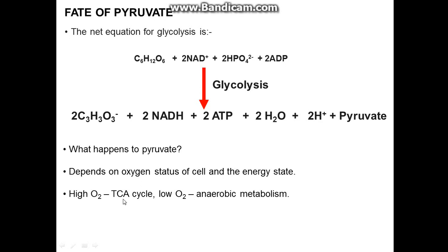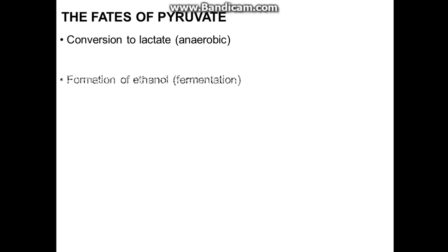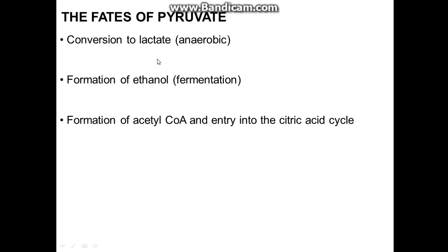High oxygen leads to the TCA cycle, which is the tricarboxylic acid cycle. Low oxygen leads to anaerobic metabolism. In this episode I'm going to be discussing solely anaerobic metabolism and alternatives to the TCA cycle. Pyruvate can either be converted to lactate, which is anaerobic when there's no oxygen, or to ethanol — anaerobic but in yeast and certain bacteria — or to acetyl-CoA entering the TCA cycle, which I'll discuss in the next episode under pyruvate dehydrogenase.